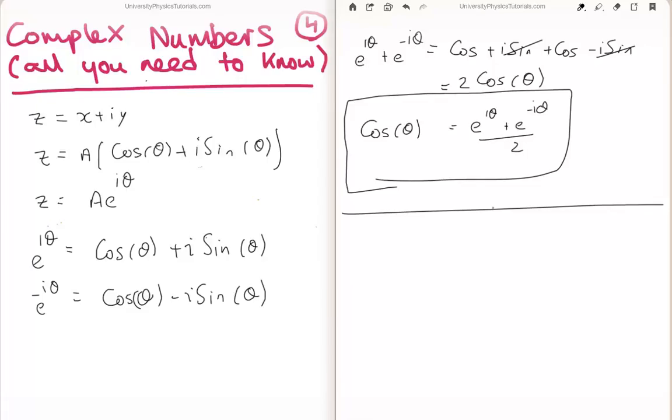And similarly in order to get sin in terms of your complex exponentials, we subtract them. So we're going to get e to the i theta minus e to the minus i theta divided by 2i.